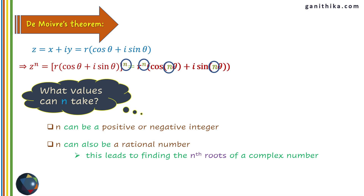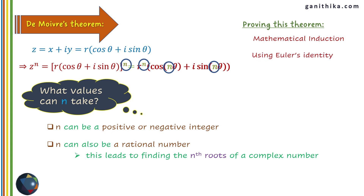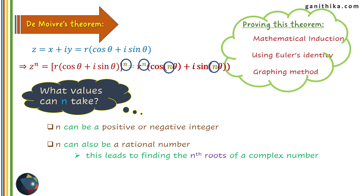There are many proofs for this theorem. The most important is by mathematical induction, which you can try yourself after this video. The next important proof uses Euler's identity, and another uses a graphing method. These are the most commonly used proofs, though there are many more.